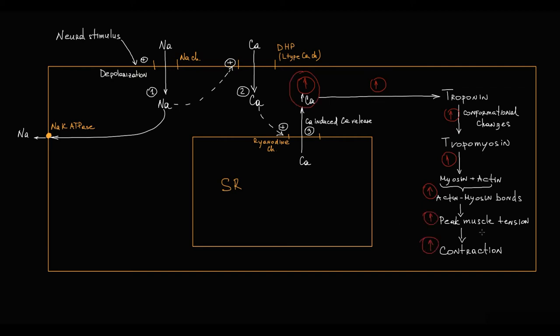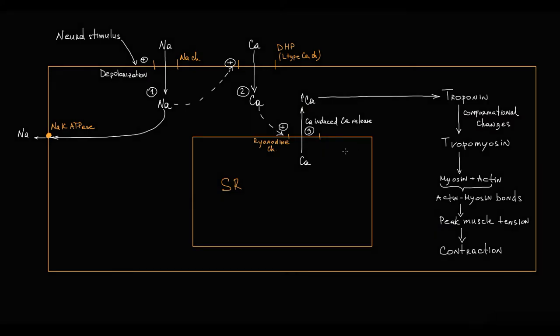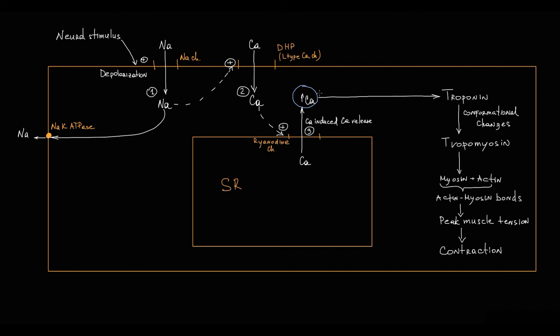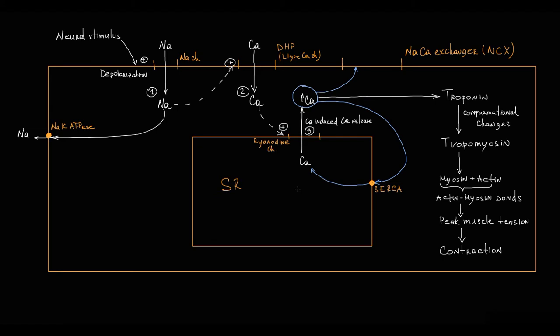After contraction, relaxation of cardiomyocytes must occur. To relax, calcium level in the cytosol must decrease. This decrease occurs by two mechanisms: by the sodium-calcium exchanger on the sarcolemmal membrane, and by SERCA — a pump located on the sarcoplasmic reticulum that pumps calcium from the cytosol back into the sarcoplasmic reticulum.